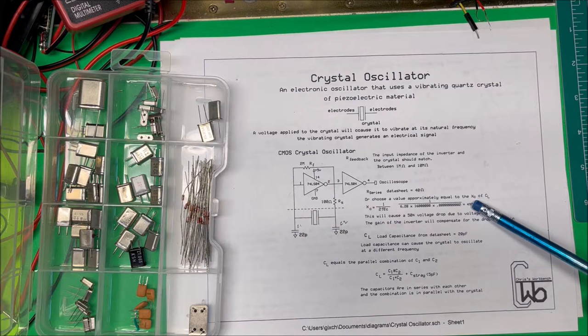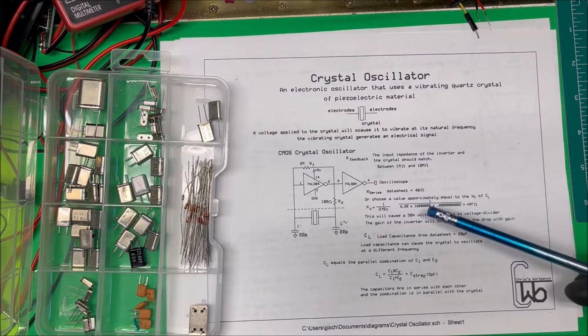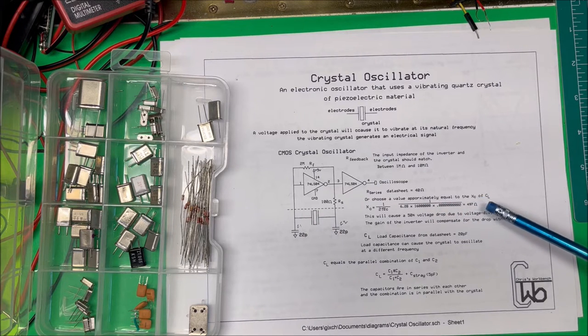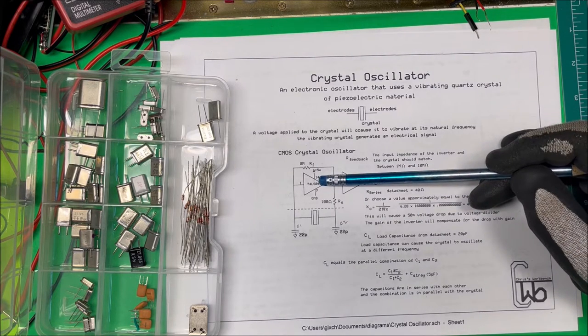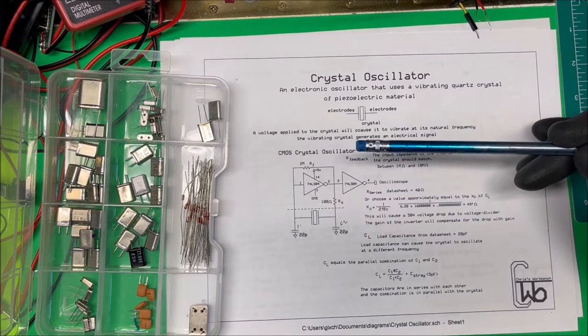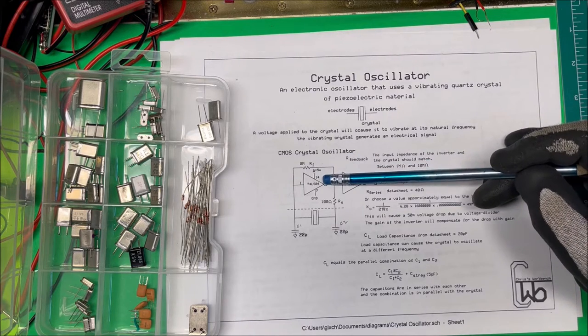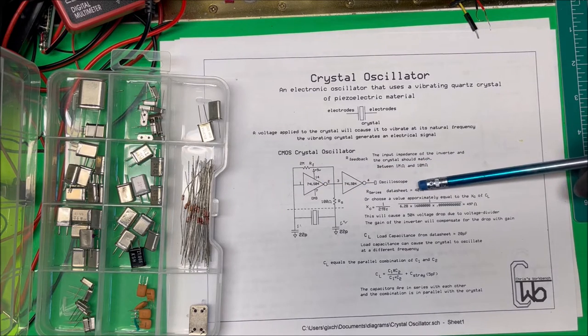Now if we use this 500 ohms here, that's going to cause a 50% voltage drop due to being a voltage divider. But the gain of the inverter will compensate for that drop, so we're good with that. The minimum is 40 ohms. I'm going with 100 ohms.